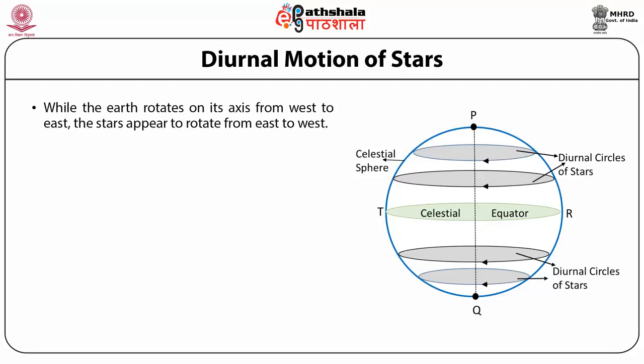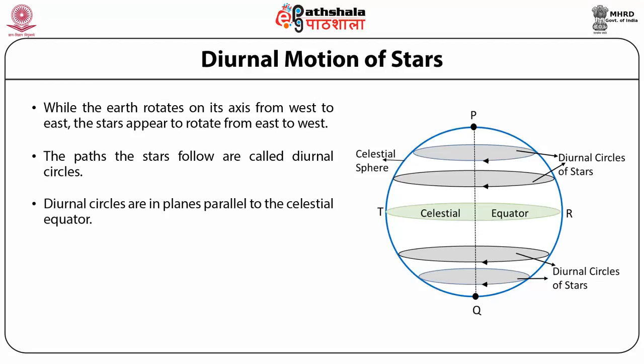While the Earth rotates on its axis from west to east, the stars appear to rotate from east to west in orbits. These orbits are in planes perpendicular to the axis of rotation, parallel to the plane of the celestial equator. The paths the stars follow are called diurnal circles, shown as circles in the picture. Diurnal circles are in planes parallel to the celestial equator.